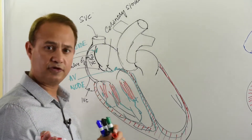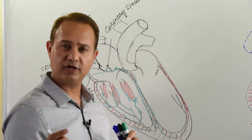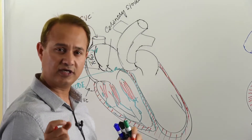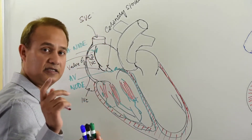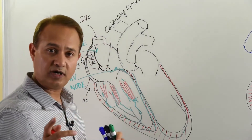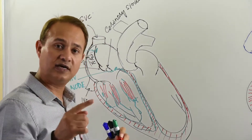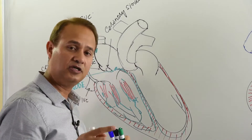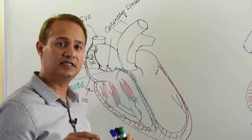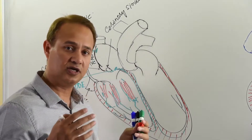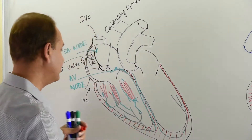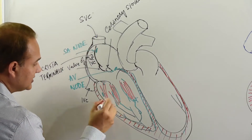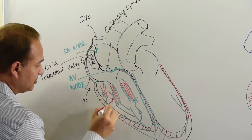A trivia question: where do the papillary muscles come from embryologically? The answer is the trabeculated part of the ventricle, which comes from the primitive ventricle — the original primordial ventricle.